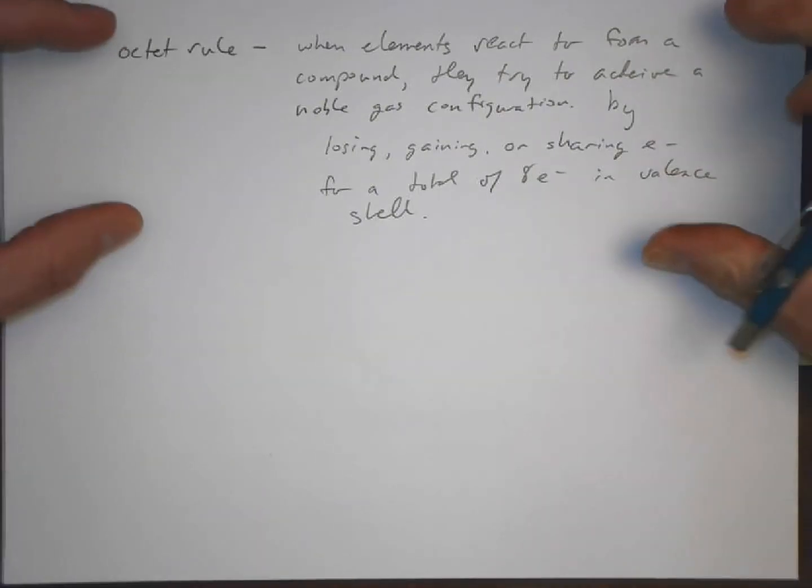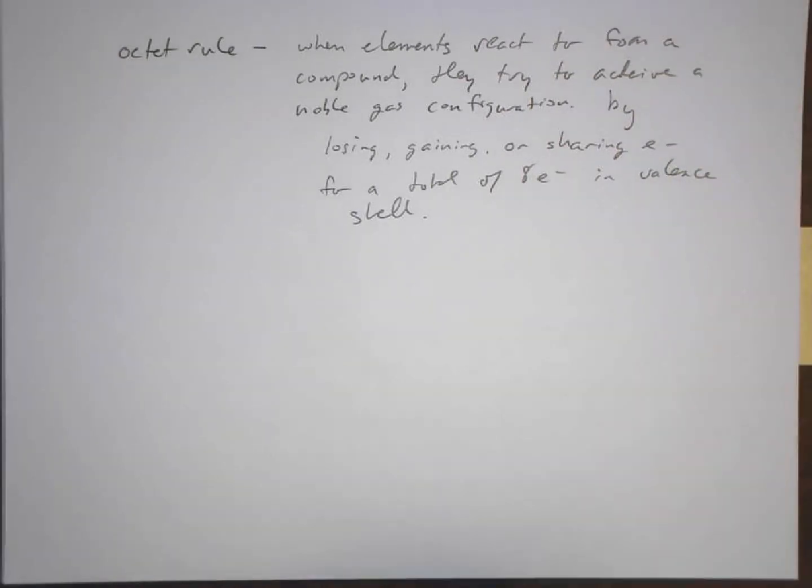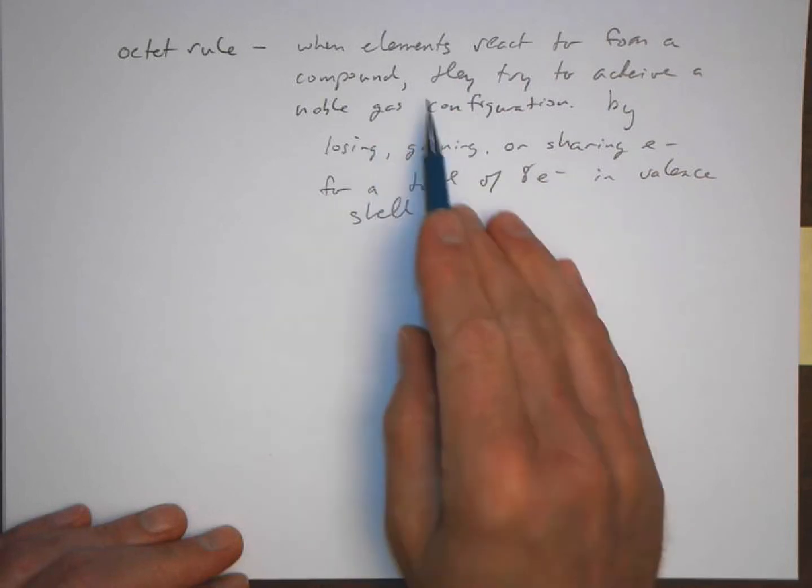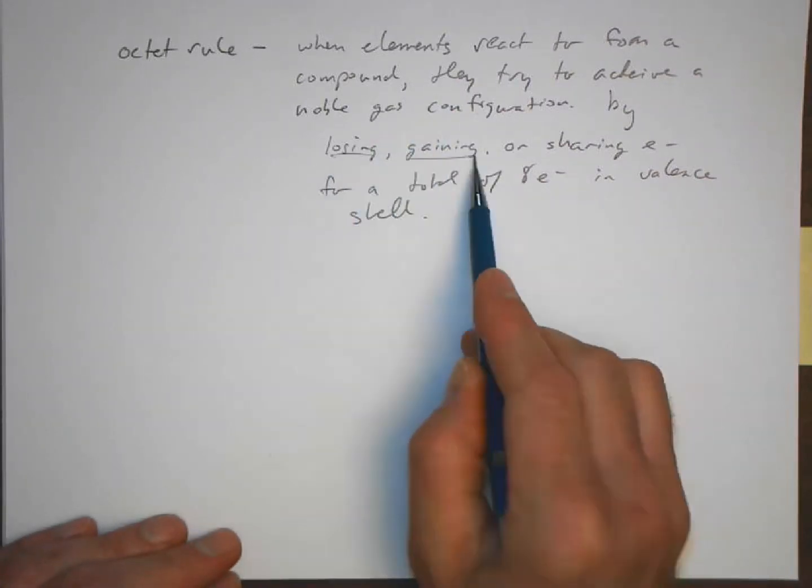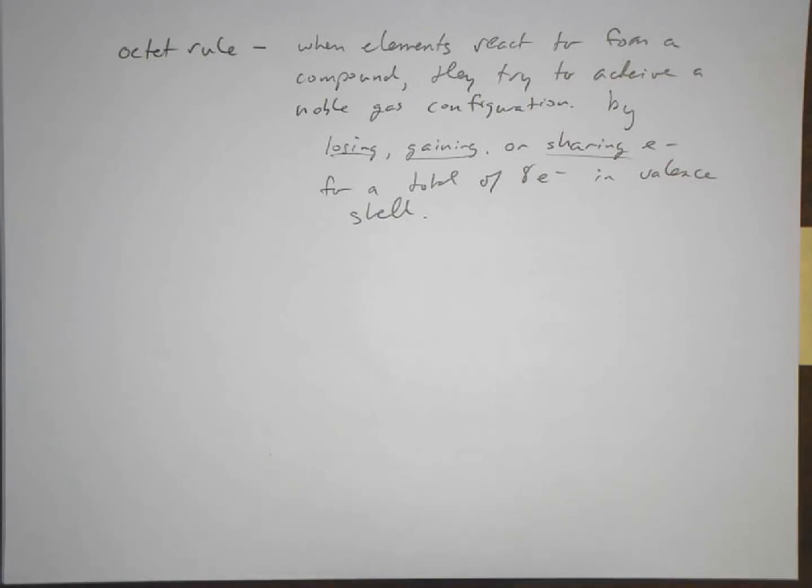For a total of 8 electrons in the valence shell. We're going to use this octet rule as we go to look at these things. Elements are going to react. They're going to lose, gain, or share electrons to make it so that they have a valence shell that's like a noble gas configuration. Hence we call it the octet rule.